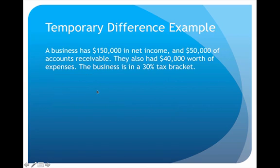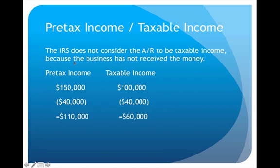In our example, a business has $150,000 in net income, $50,000 of which is accounts receivable. They also had $40,000 worth of expenses and are in a 30% tax bracket. The key issue is the accounts receivable: in GAAP accounting we consider accounts receivable to be revenue, but according to the IRS, since the money has not been received yet, they don't consider that to be taxable. That's the core discrepancy.